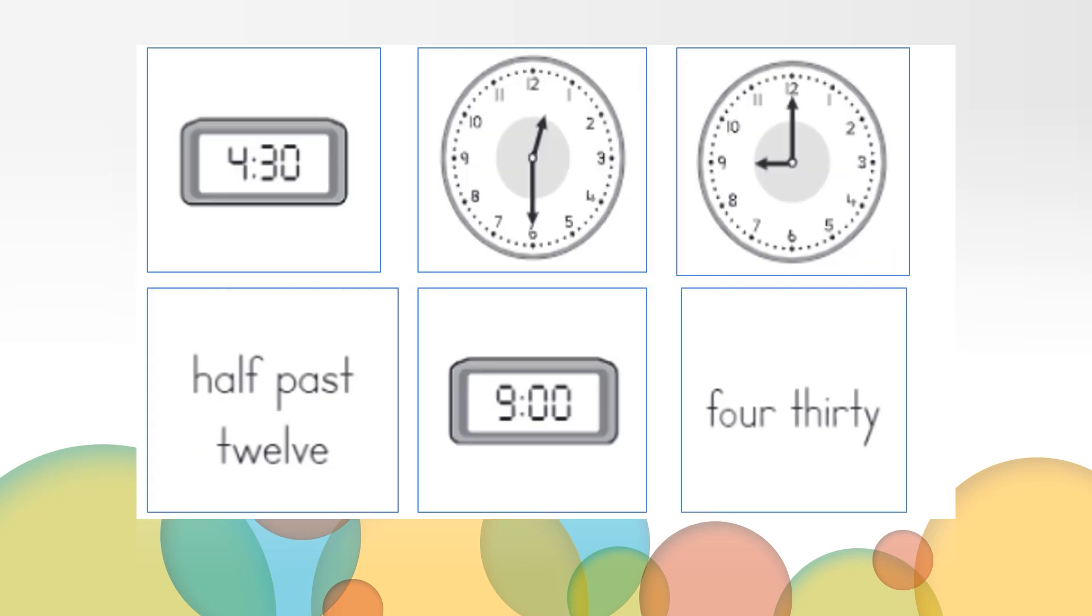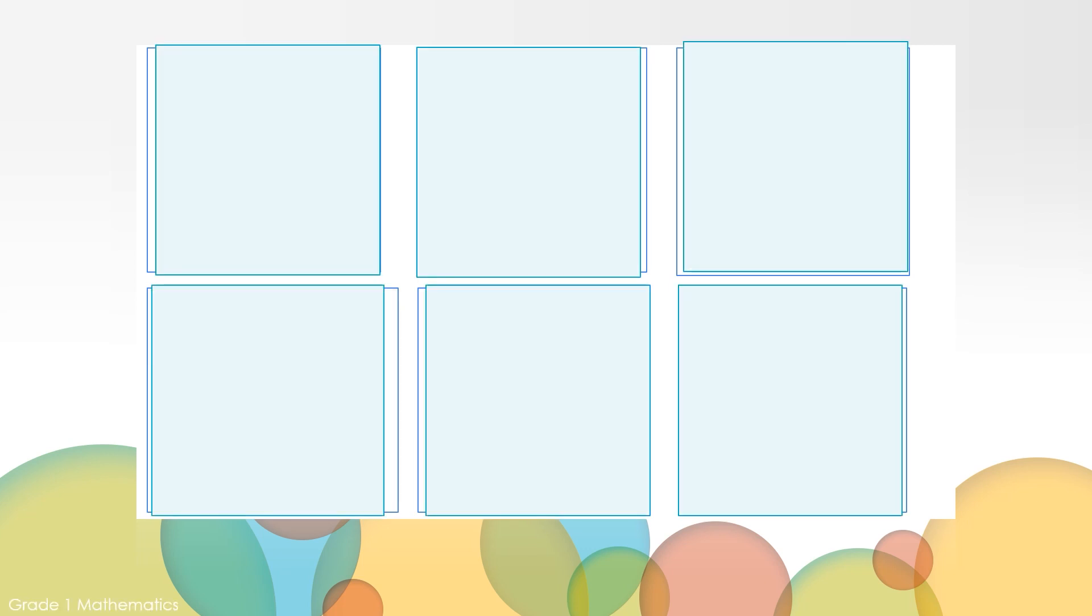Take a moment and get a good look at the cards. We're going to cover the cards up and try to find some matches. Let's turn over two cards and see if they are a match. When we flip a card over, ask yourself, what time is shown on each clock? Practice saying the time out loud to yourself that is shown on each clock.